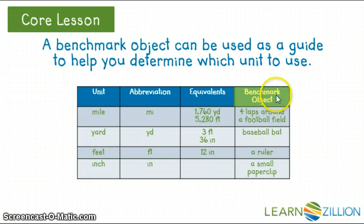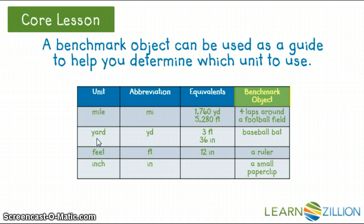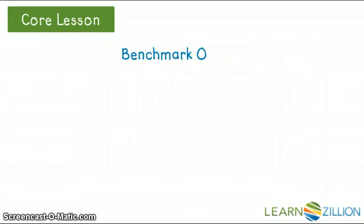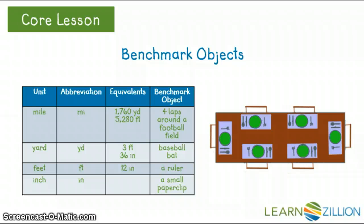If you take a look over here — a mile, we can think of that as 1,760 yards, 5,280 feet, but that's a little bit hard to visualize. So if you're thinking of a mile, think of four laps around a football field. That's a little bit easier for us to visualize. A yard is about the length of a baseball bat — that's easier than visualizing 3 feet or 36 inches. A foot is 12 inches, and you are familiar with what a ruler is, so that is our benchmark object for a foot. And an inch could be a small paper clip — just think of a small paper clip. With these benchmark objects in mind, we can determine which one is best to use to measure the table.